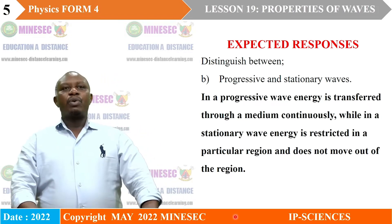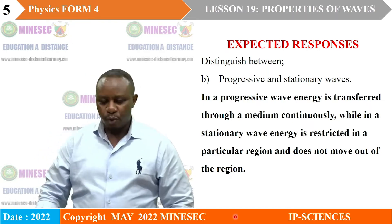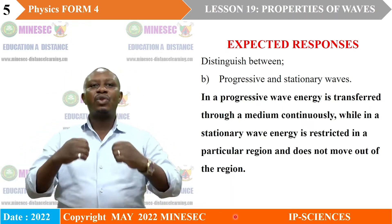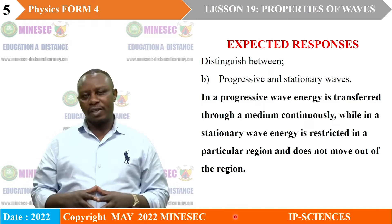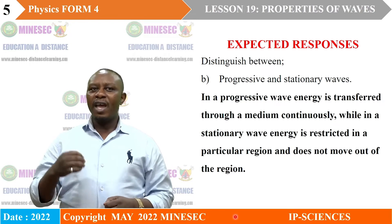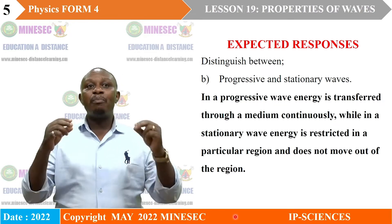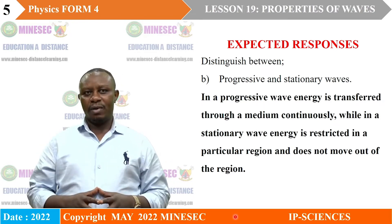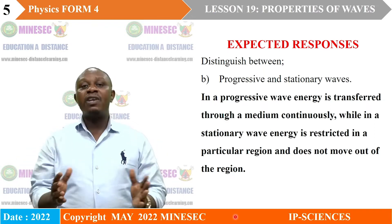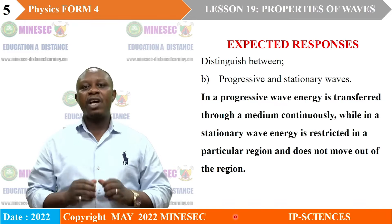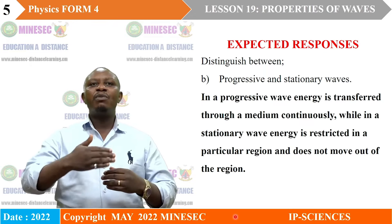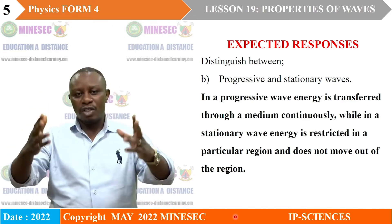The difference between progressive and stationary waves: in a progressive wave, energy is transferred through a medium continuously. While in a stationary wave, energy is restricted in a particular region — the energy does not move out of a given region. Whereas in a progressive wave, the energy moves through the medium continuously.